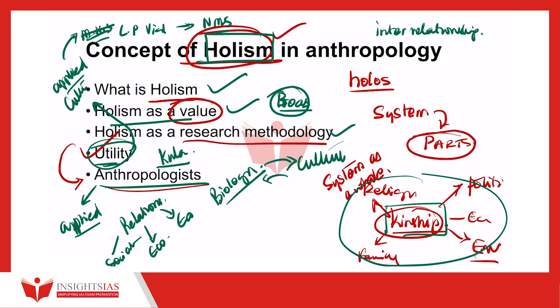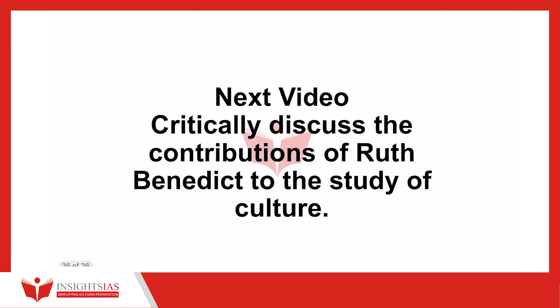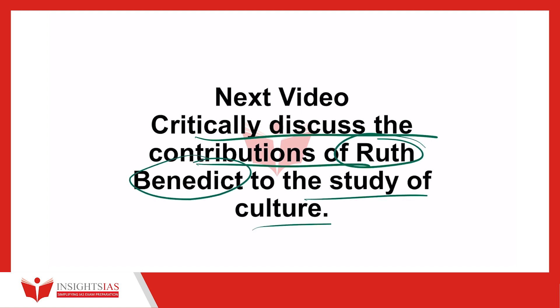So these are various ideas about holism — holism as a value, holism as a research methodology, holism as a part of applied anthropology. This can itself be asked as a 10-marker, or when writing about the unique aspects of anthropology or methodology, you can definitely quote holism and explain it. I hope this video was useful. In the next video, let us try to critically discuss the contribution of Ruth Benedict to the study of culture. Thank you for watching.